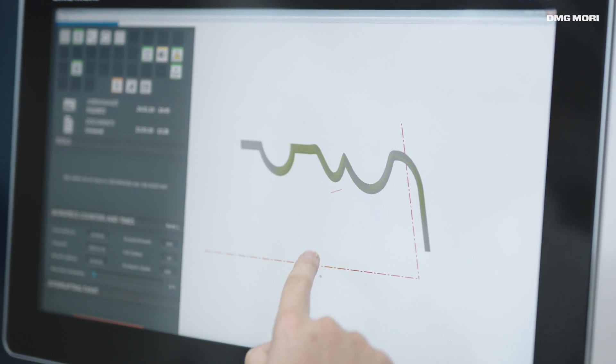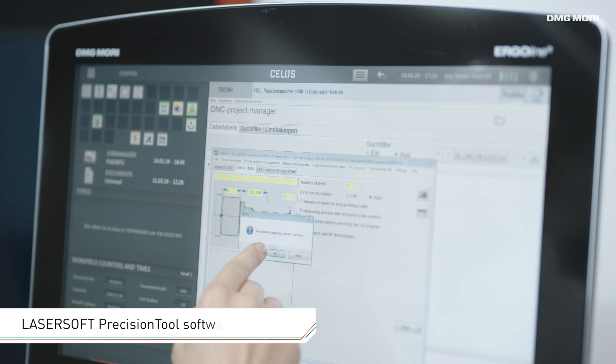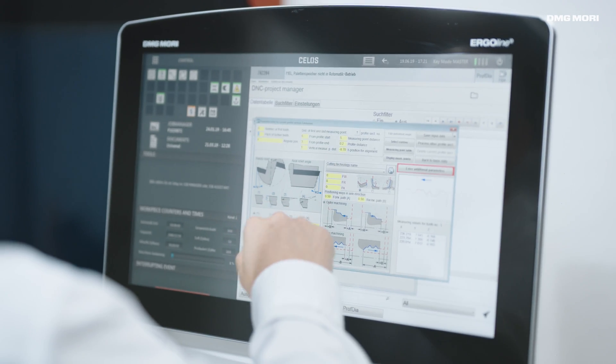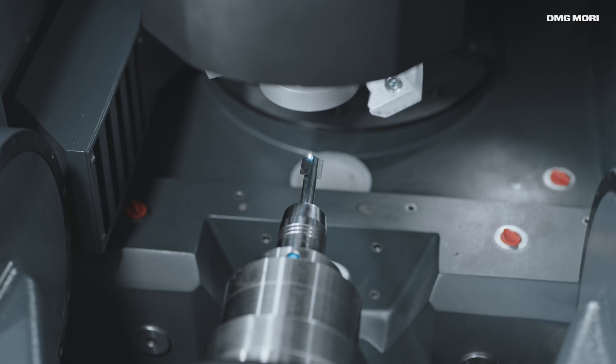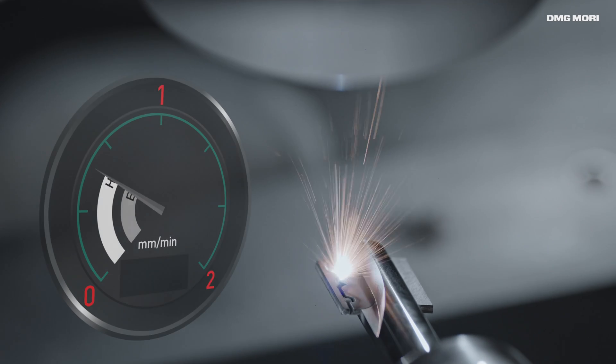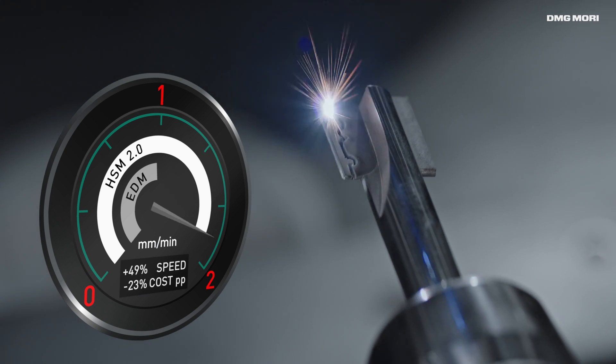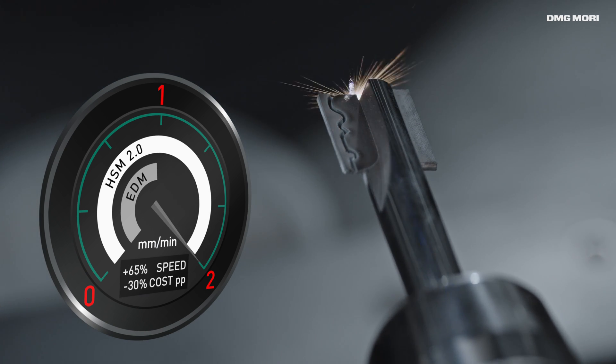User-friendly Lasersoft precision tool software packages make it easy to create CNC programs directly from 2D and 3D CAD data. The new high-speed mode 2.0 can increase the machining speed up to 2 mm per minute.